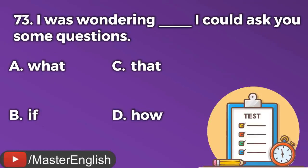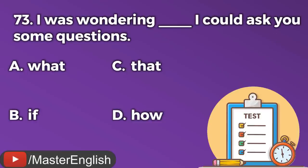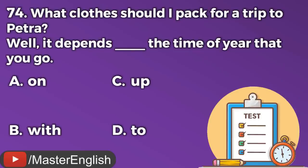Question number seventy-three. I was wondering ___ I could ask you some questions. A: What. B: If. C: That. D: How. The correct answer is B: If. I was wondering if I could ask you some questions. Question number seventy-four. What clothes should I pack for a trip to Petra? Well, it depends ___ the time of year that you go. A: On. B: With. C: Up. D: To. The correct answer is A: On. It depends on the time of year that you go.